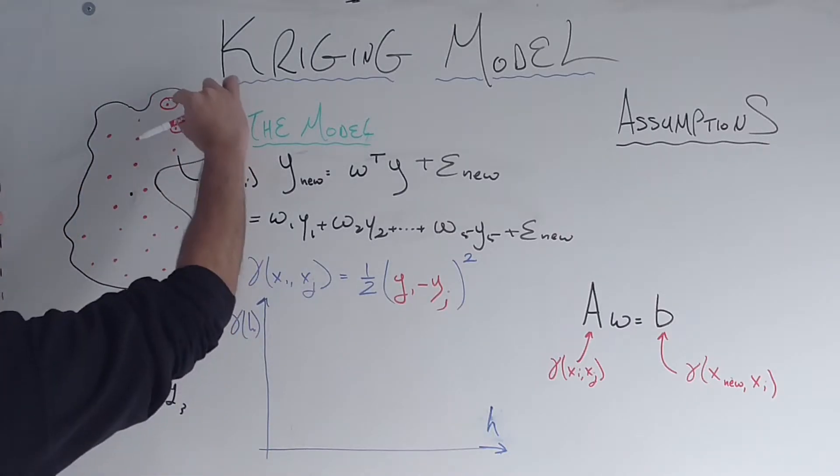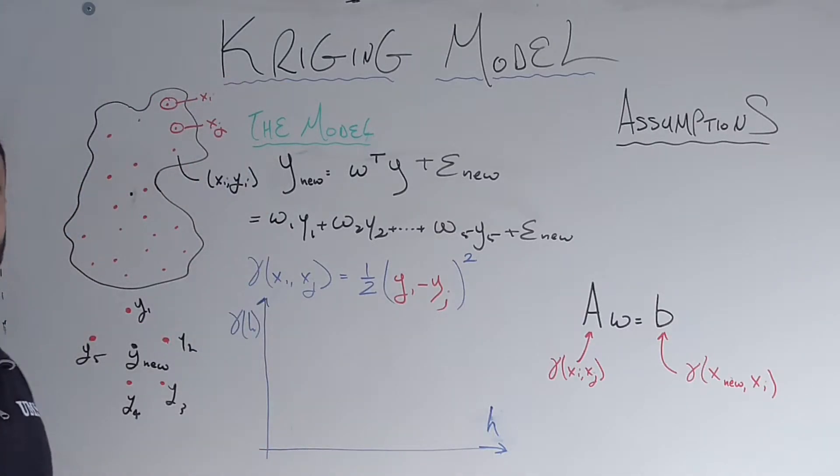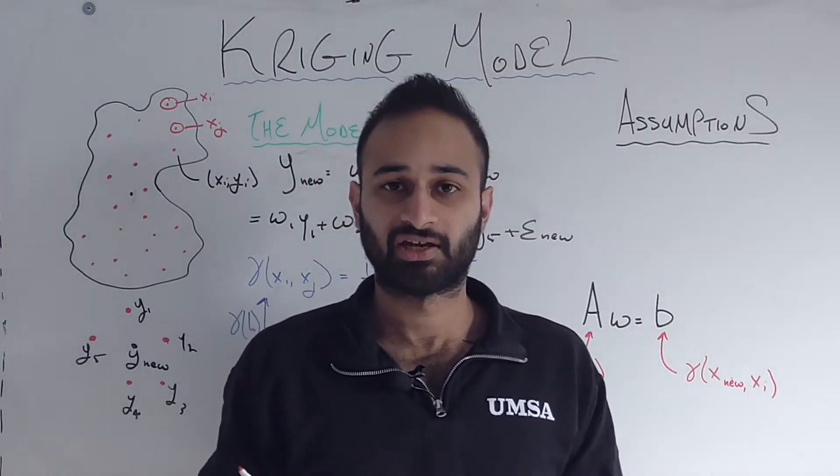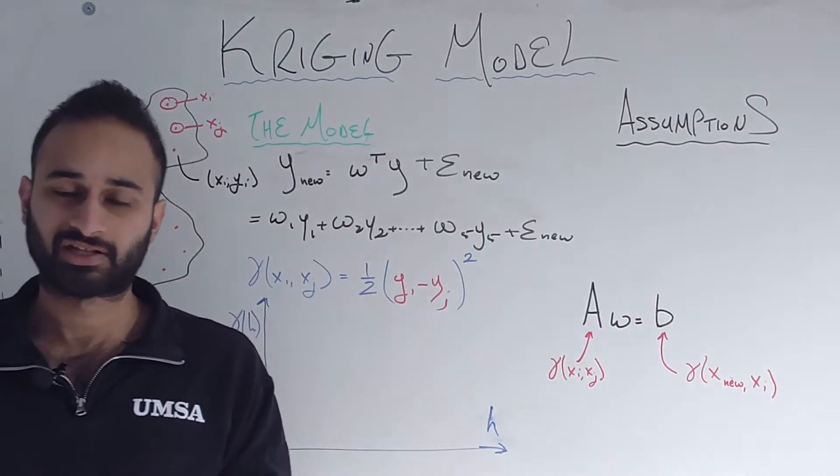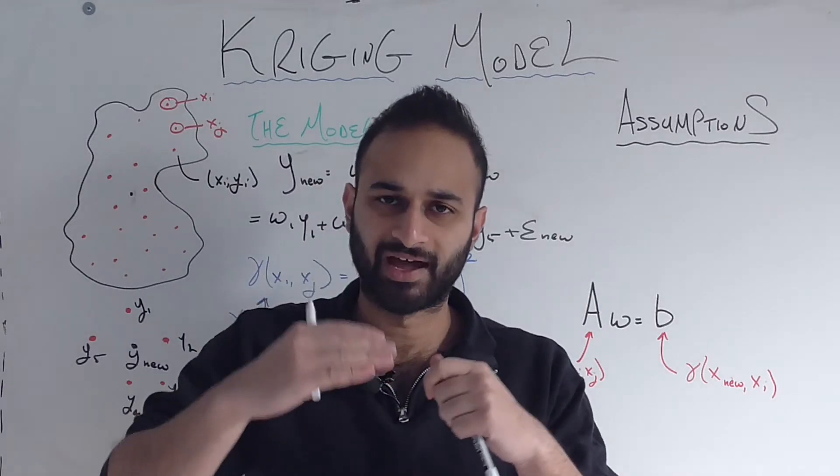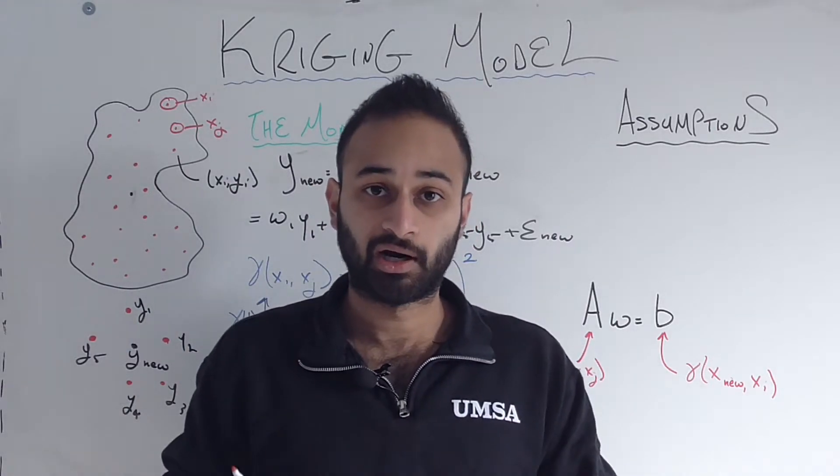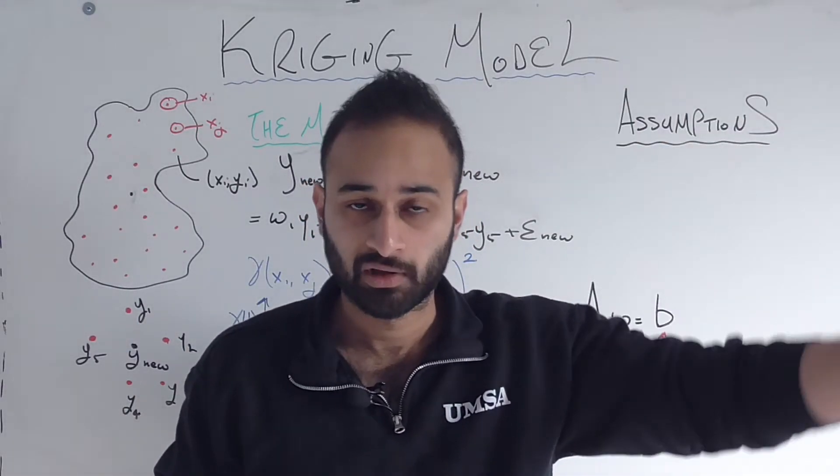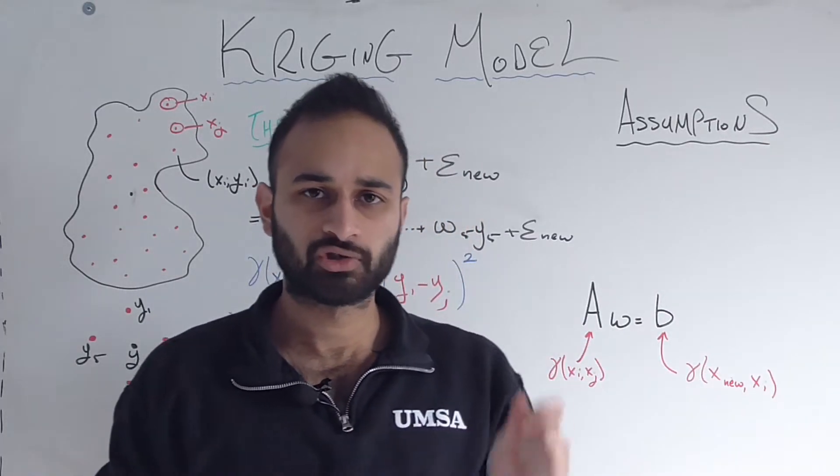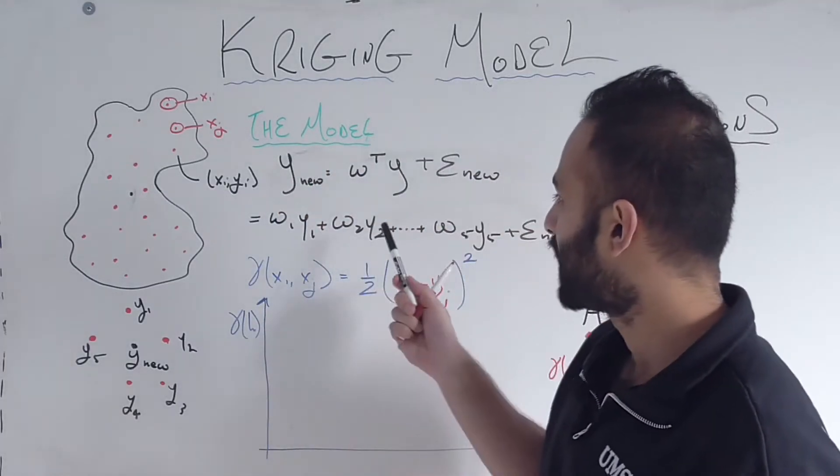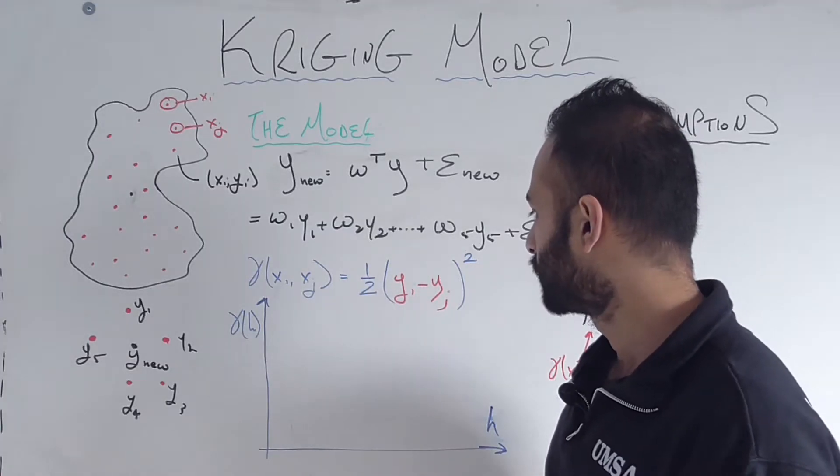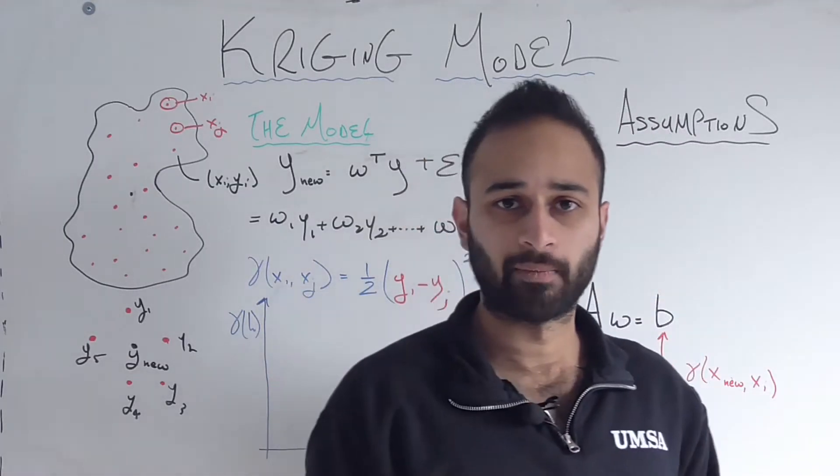And what would we kind of expect from this function? We would expect that the closer two points are in space, the smaller gamma would be, right? Because if I'm here in space and I take one step to my right, that's a very small change in distance so my elevation should also not be that different. Whereas if I'm here and I go walk a mile away, then I would expect my elevation to potentially change by a lot. So we're thinking that the closer two points are together, the closer xi and xj are to each other, the smaller this yi minus yj will be, therefore the smaller gamma should be.